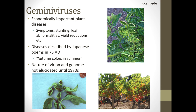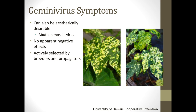Gemini viruses are generally found in agriculture, but there are times where their symptoms are actually desirable. This is Abutilon mosaic virus — people may be familiar with flowering maples. These symptoms are associated with desirable traits, and so breeders and propagators positively select plants infected with these viruses that lead to these nice-appearing mosaic leaves.